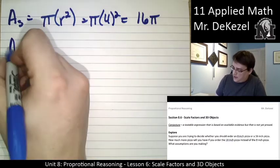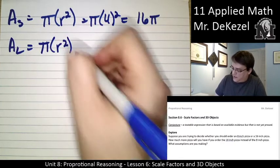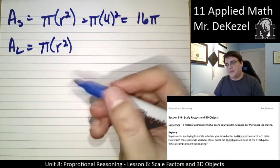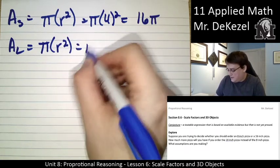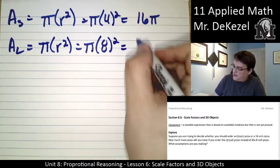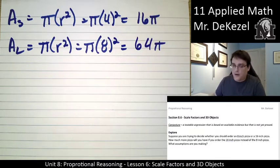We can also do the area of the large pizza, pi times r squared. If the diameter of the pizza is 16, the radius is 8. So, pi times 8 squared gets us 64 pi.